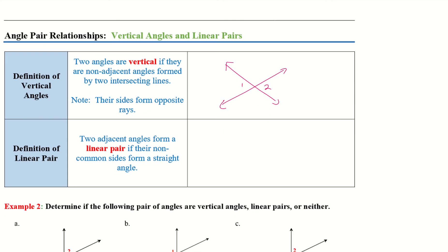Definition of linear pair: two adjacent angles form a linear pair if their non-common sides form a straight angle. So if we have something like this — A and B — A and B are linear pairs. They form this straight line down here at the bottom, and the two angles make that straight line.